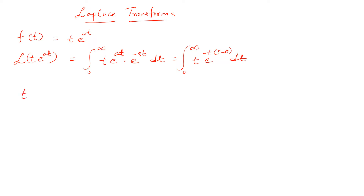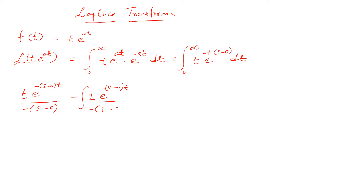We will integrate using the by-parts rule. By the by-parts rule, this is: first function times the integral of the second function, minus the integral of the derivative of the first function multiplied by the integral of the second function. This gives us the expression from 0 to infinity, and now we will integrate again.